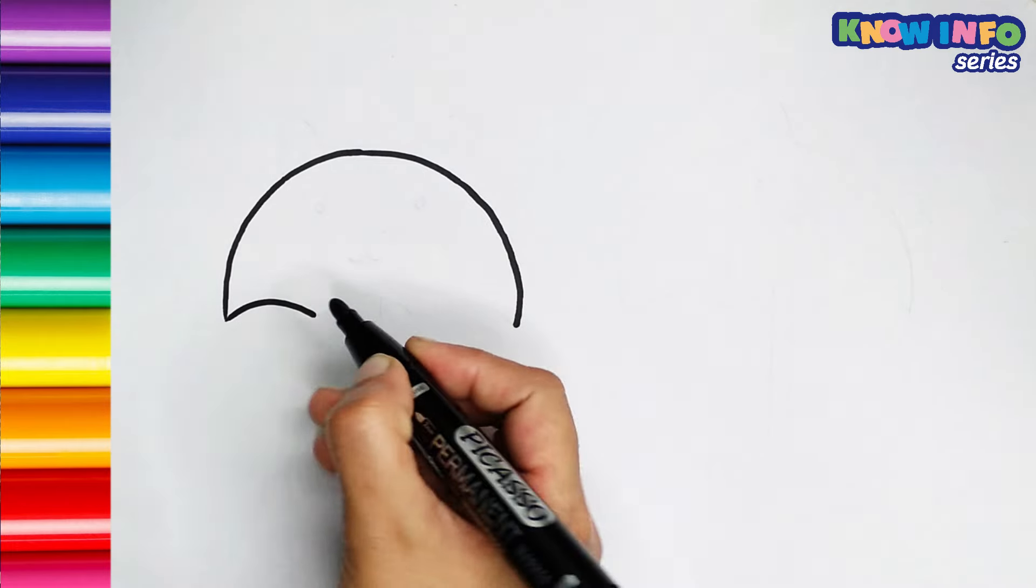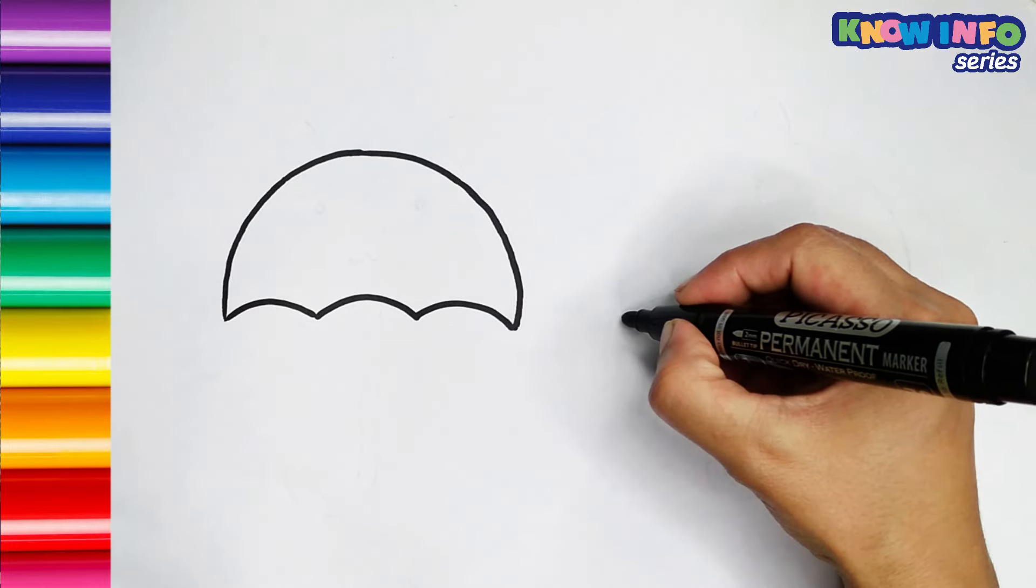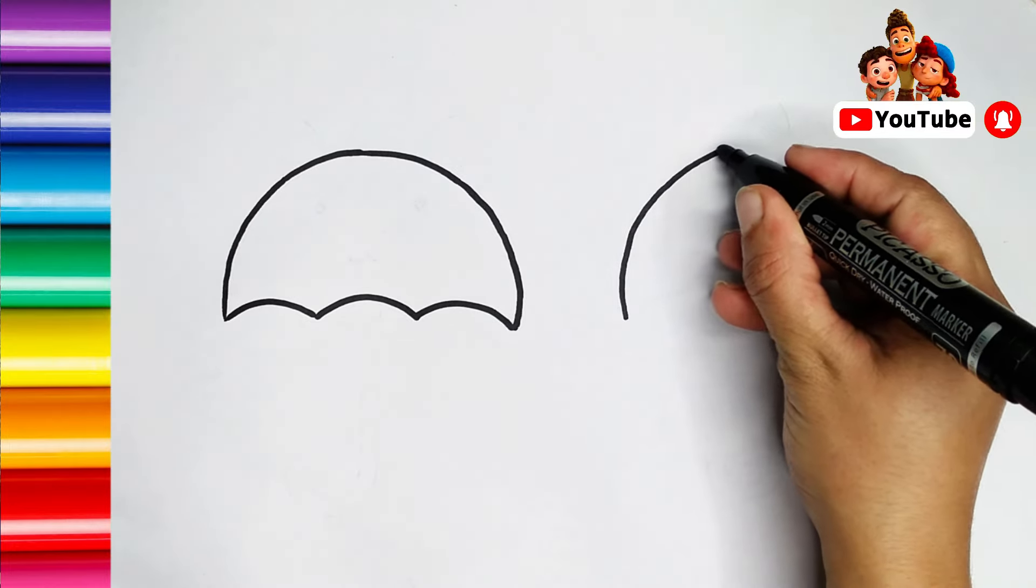Now draw three curved lines beneath the long curved line to complete the canopy. Repeat the same steps for the second umbrella.